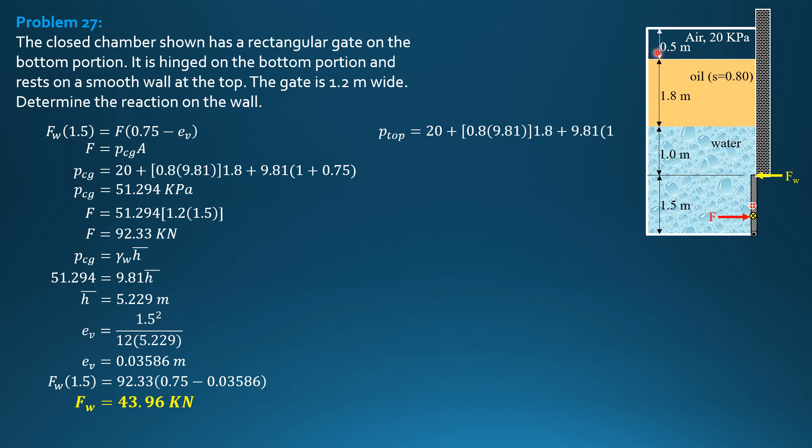So pressure at the top is 20 plus 0.8 times 9.81 times 1.8 plus 9.81 times 1 only because we are computing pressure at the top of the gate. So pressure at the top of the gate is 43.936 kilopascals, while the pressure at the bottom of the gate is pressure at the top plus 9.81 times 1.5. Pressure at the top plus 9.81 times 1.5. So pressure at the bottom is equal to 58.651 kilopascals. What is important is the increase in pressure is 9.81 times 1.5.